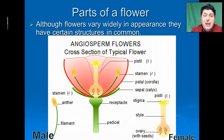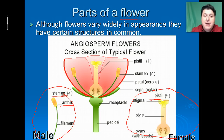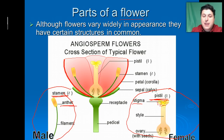Monocots and dicots are all angiosperms — they're all flowering plants. Even though the flowers vary widely in appearance, they have certain structures in common. They have male parts called the stamen and female parts called the pistil. The stamen consists of a long filament with an anther on top, in which the pollen grains are developed. The pistil has three parts: the top part is called the stigma, which is usually sticky to facilitate pollen sticking to it; the stigma is connected by the style down to the ovaries, where the seeds will be fertilized by sperm carried with the pollen.